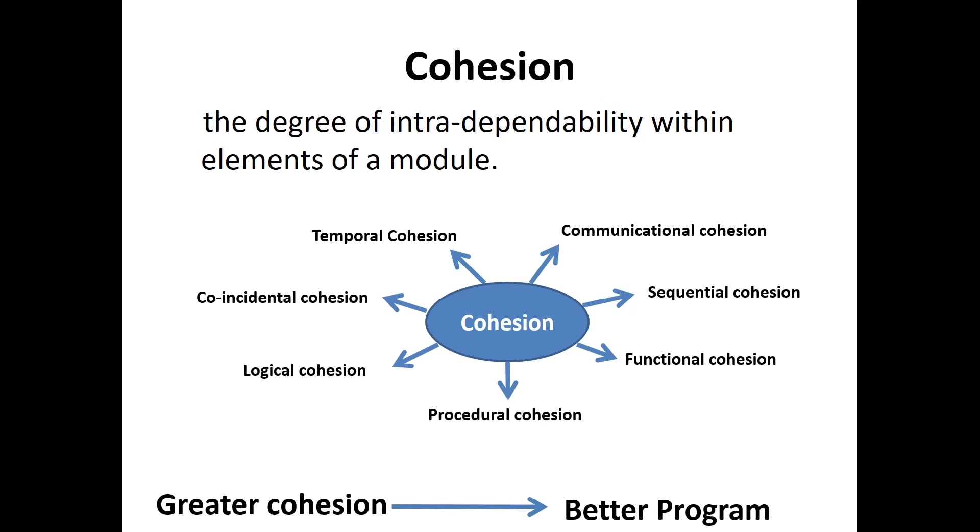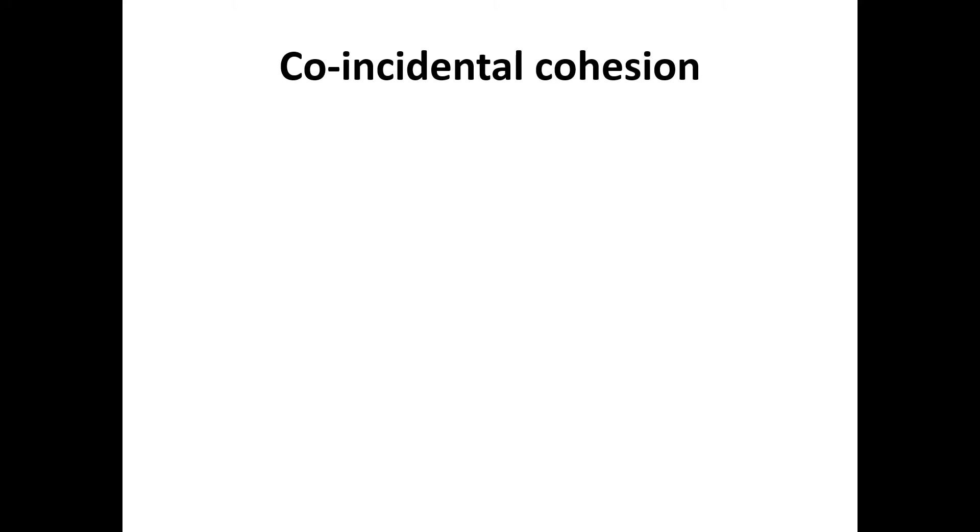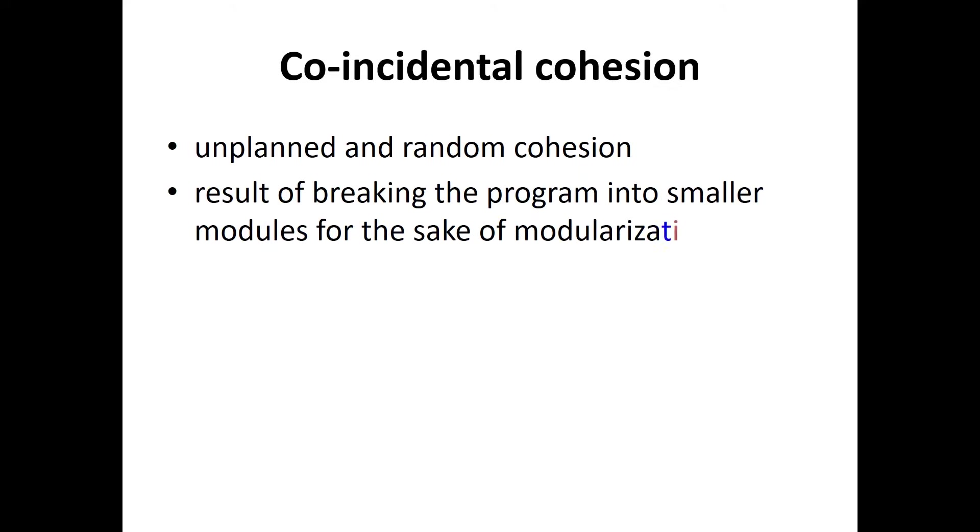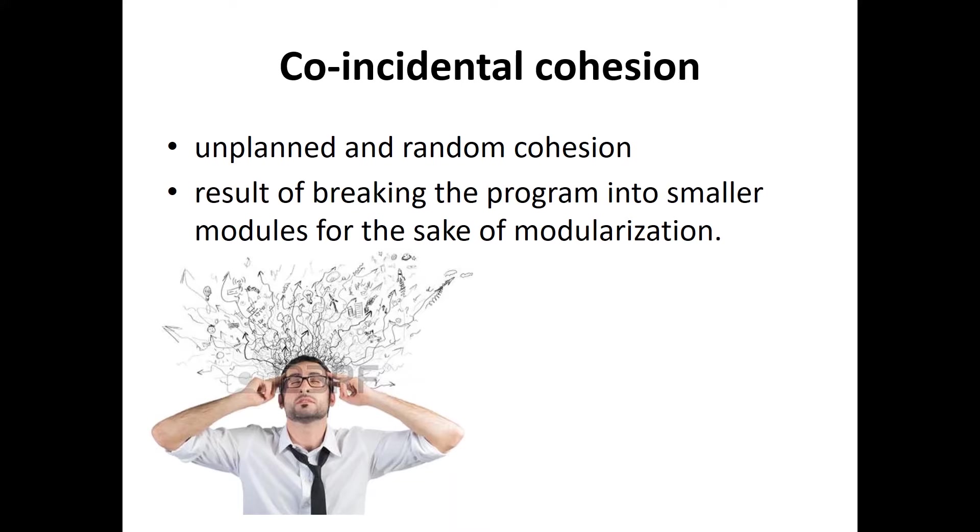Namely, coincidental cohesion. It is unplanned and random cohesion which might be the result of breaking the program into smaller modules for the sake of modularization. Because it is unplanned, it may cause confusion to the programmers and is generally not accepted.